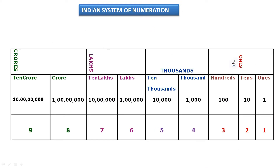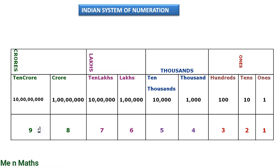Here is the table with periods: ones, thousands, lakhs, and crores. The numbers from one to nine represent the places. In this table we have periods and places. These places help us know from where we can start reading large numbers.